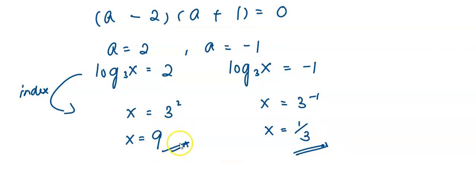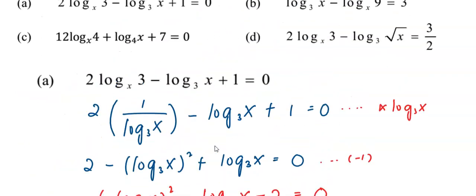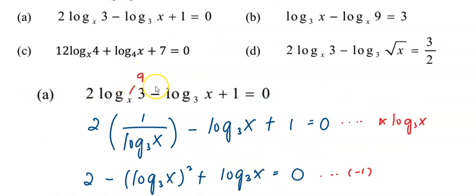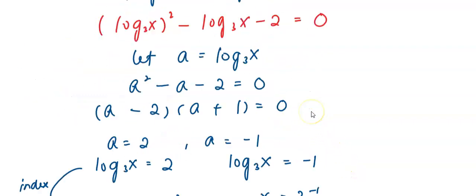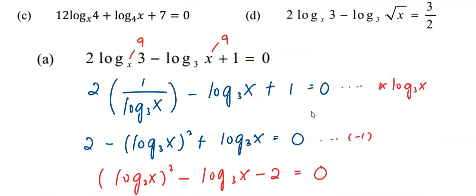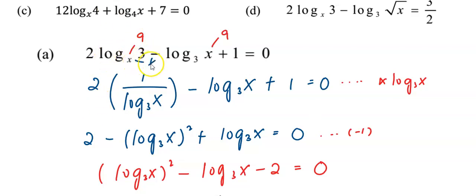We have to check the answers to see whether we accept both solutions or just one. We substitute 9 into x in the original equation and use a calculator to calculate those values. If the left-hand side equals 0, which matches the right-hand side, then x equals 9 is accepted. After that, we check x equals 1 over 3 by substituting it into x.